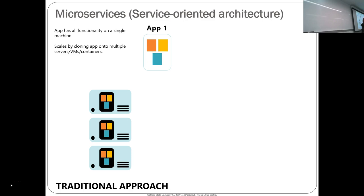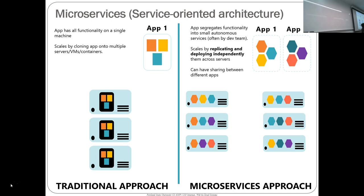Microservices take your app and containerize each part separately. Then you can replicate containers as needed — if the blue service only needs two copies, you spin up two; if the orange service gets hit more, you spin up three. Your servers run all sorts of containers from multiple apps. If one app isn't using resources and another needs them, you can multiplex them on the same infrastructure. This is the resource flexibility that containers give you that a monolithic architecture can't.